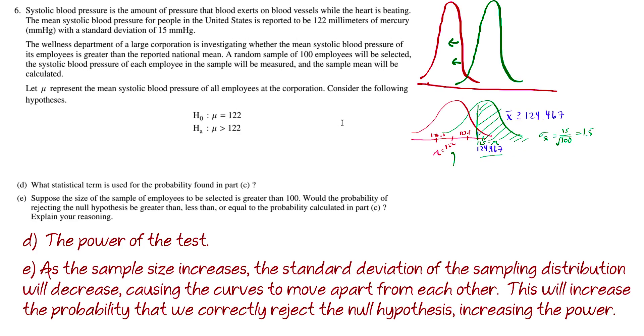Here's how I would word it. As the sample size increases, the standard deviation of the sampling distribution will decrease, causing the curves to move apart from each other. This will increase the probability that we correctly reject the null hypothesis, thus increasing the power.